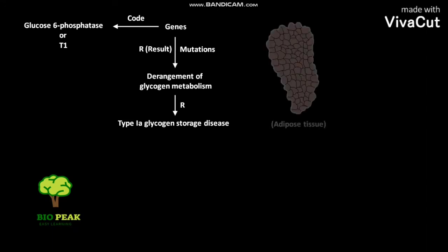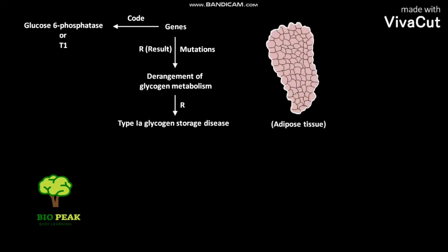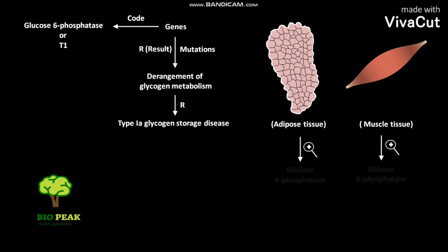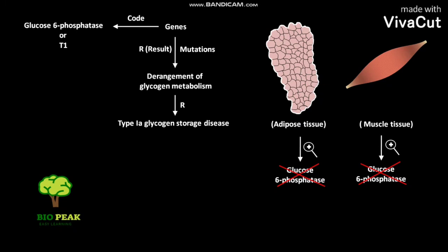The adipose tissue and muscle tissue do not contain glucose-6-phosphatase. So these tissues cannot convert glucose-6-phosphate to glucose. Therefore, these tissues do not contribute glucose to the blood.